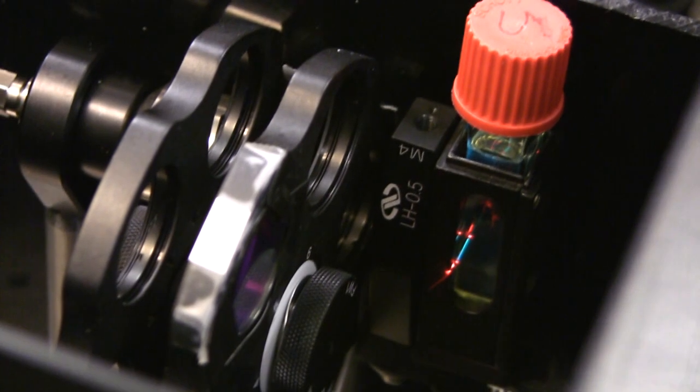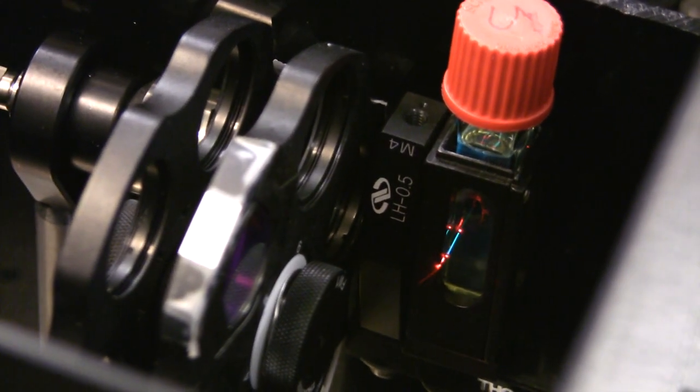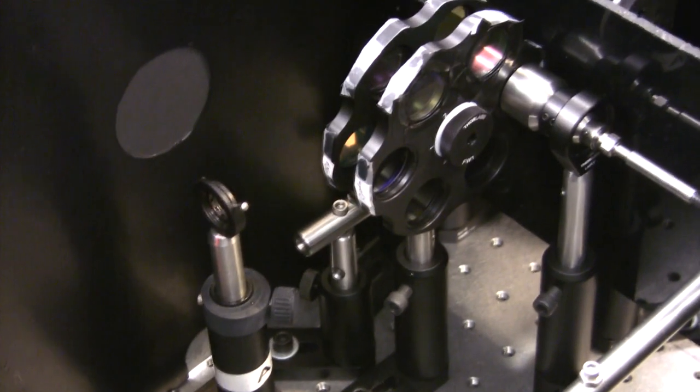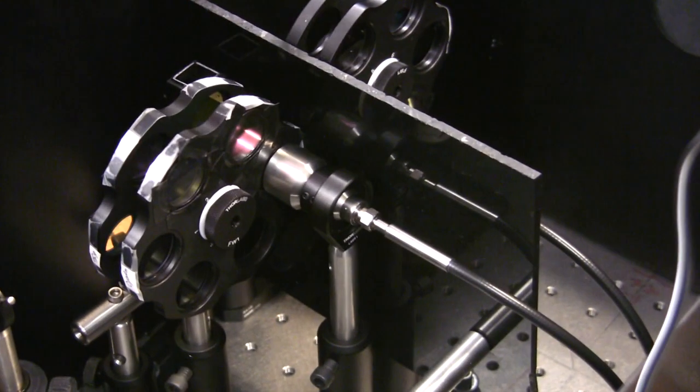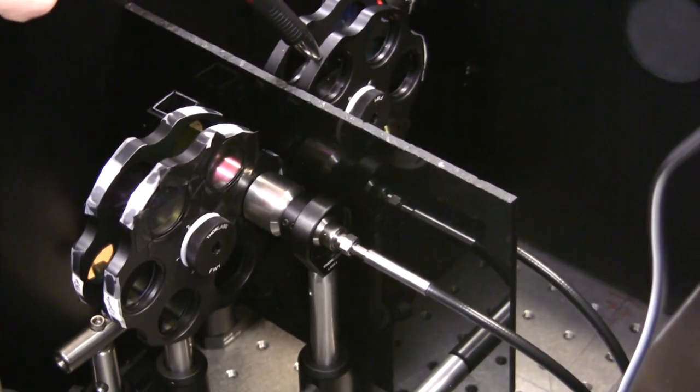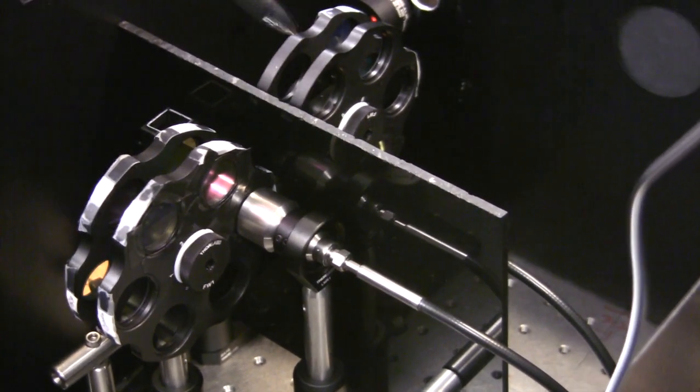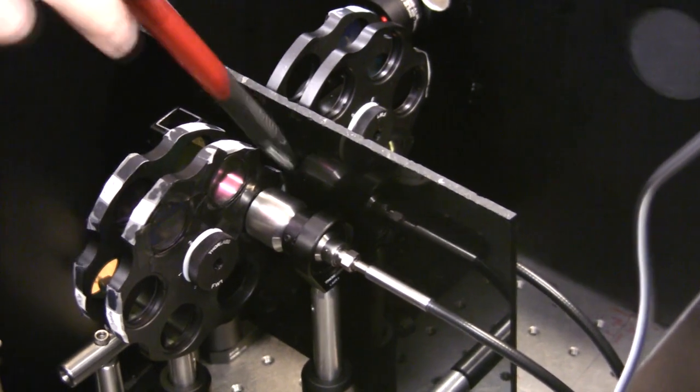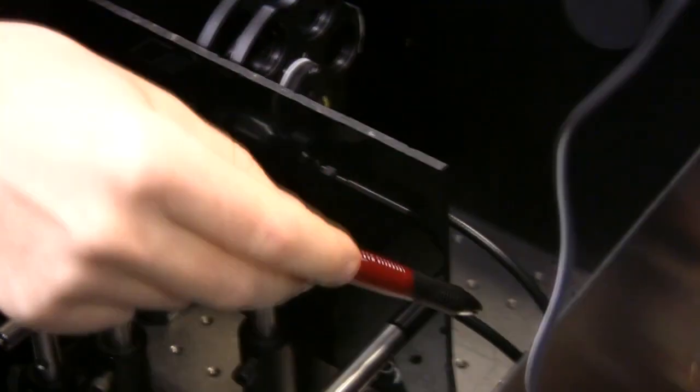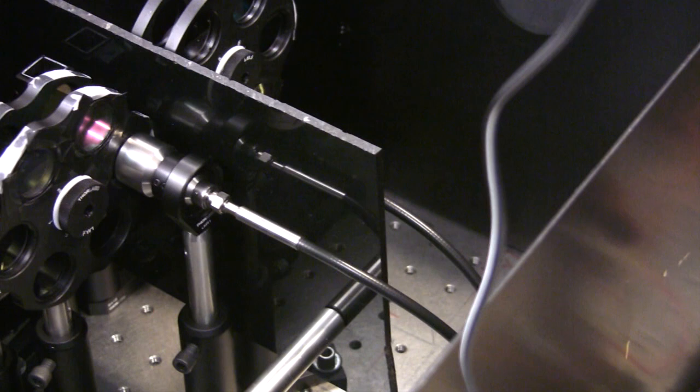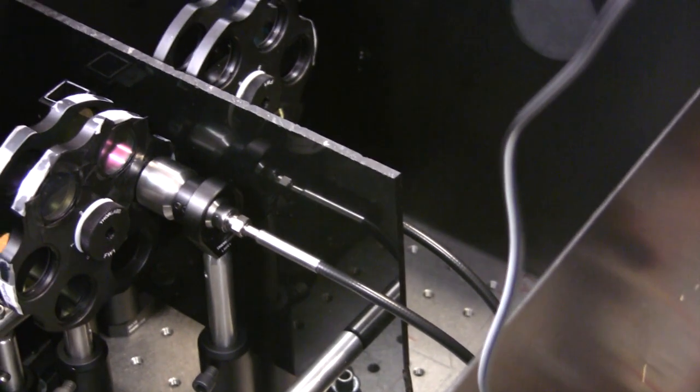Fluorescence collected from the samples gets through the set of filters which cuts residual laser light and then gets collected through the fiber optics into further spectrometer.